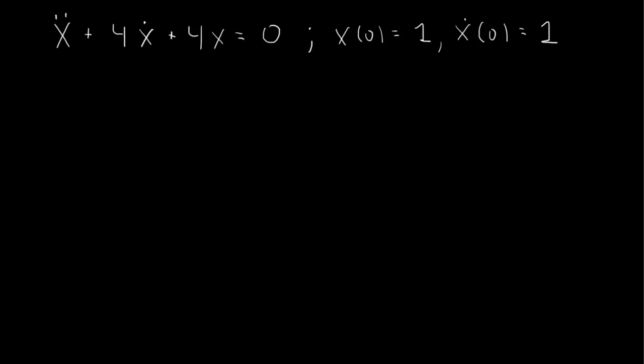So this is a second order linear homogeneous equation with constant coefficients. So we try the solution x of t equals e to the rt. We substitute in, we cancel e to the rt, and we get the characteristic equation r squared plus 4r plus 4 equals 0.